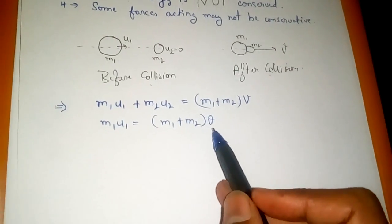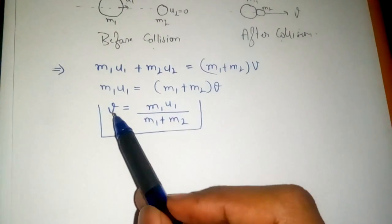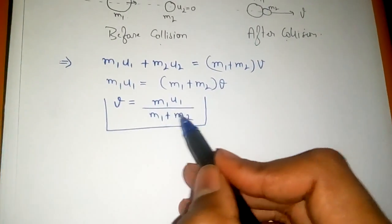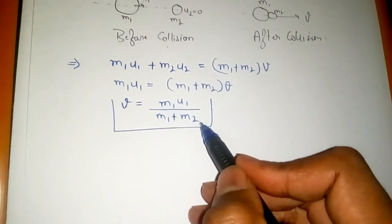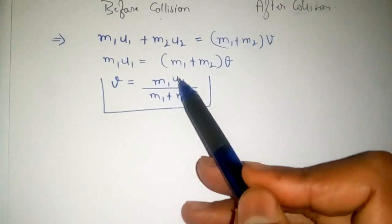In order to get the final velocity we can rearrange the equation as: v is equal to m1 u1 upon m1 plus m2. So if we know m1, m2, and u1, we can easily calculate the final velocity.